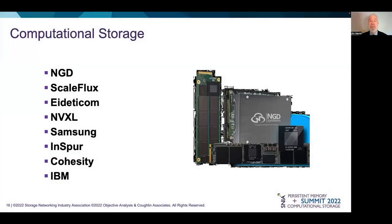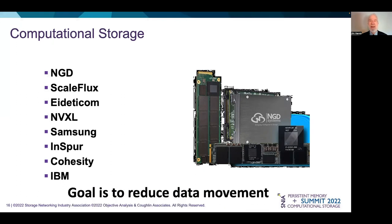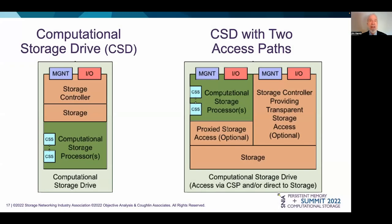The story is similar for computational storage: put some processing into an SSD or at least bring it closer so that the data doesn't have to make the costly round trip to the server. Some companies like INSPUR, Cohesity, and IBM devote the computation to a single task, like data compression or video compression. Samsung's smart SSD uses a Xilinx FPGA and enables customizable processing, including encryption, decryption, and virtual data optimization. NGD and ScaleFlux put a general purpose processor right inside the SSD, while IDETICOM puts the processor right beside the SSD or an SSD array, but not within the SSD itself. These companies, through SNIA, have done a lot of work to establish standards that will facilitate the adoption of this approach.